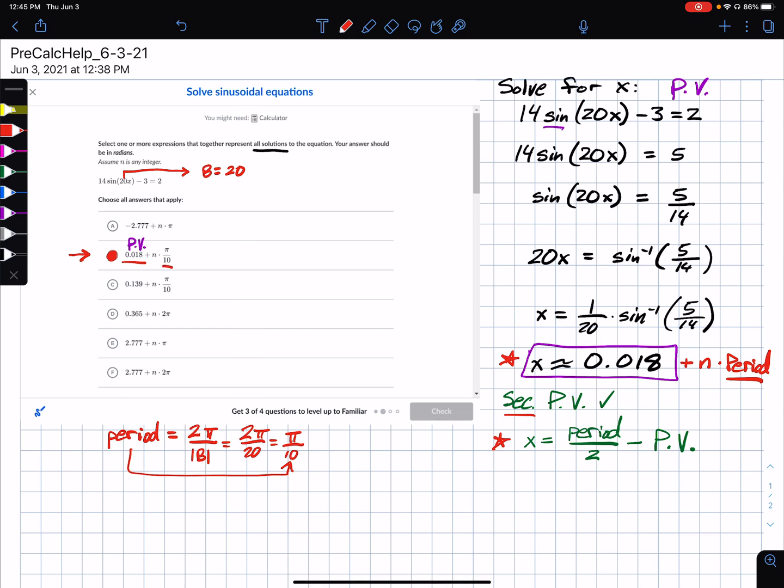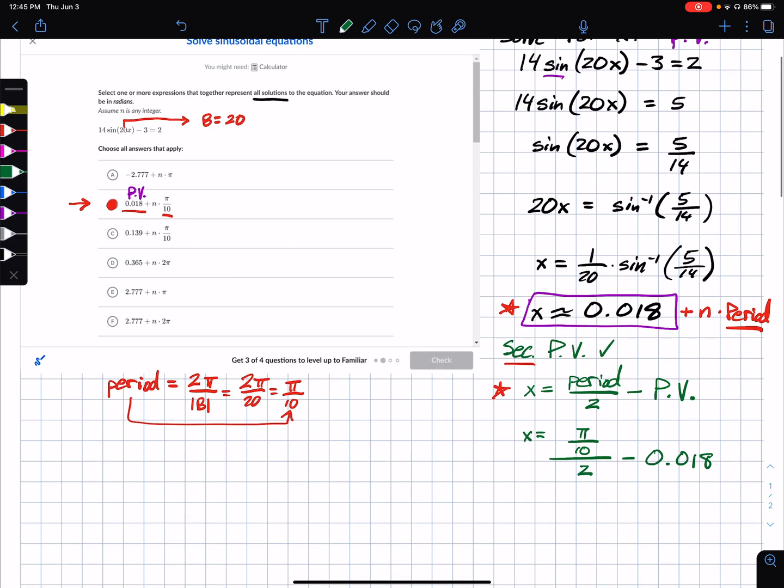Now, to find the other one, I need to go back and take this period that we just found, which was π tenths, cut that in half, and then subtract that principal value of 0.018. Okay, so let's clean that up. This is going to give us a, and look at the answers. We're fine with decimals.